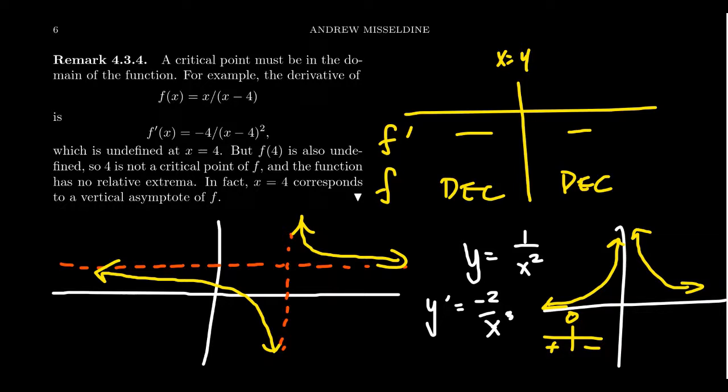So you have to consider these numbers outside the domain. But if you're outside the domain of the original function, then you cannot be a critical number. But the function could switch its monotonicity at that point.